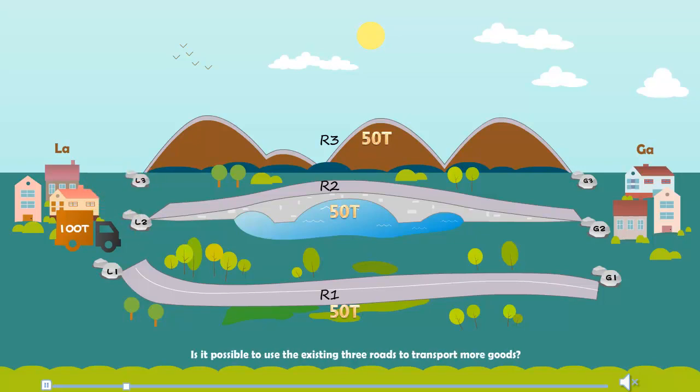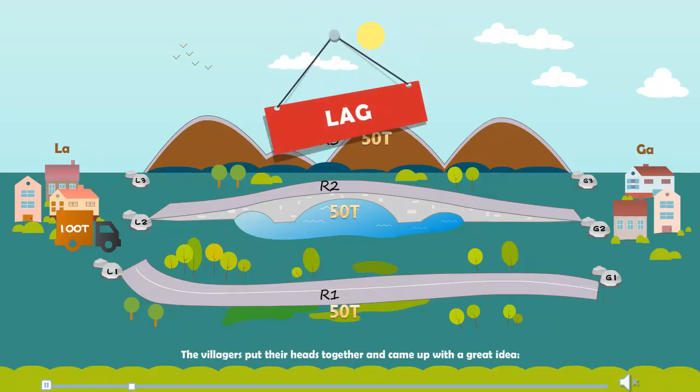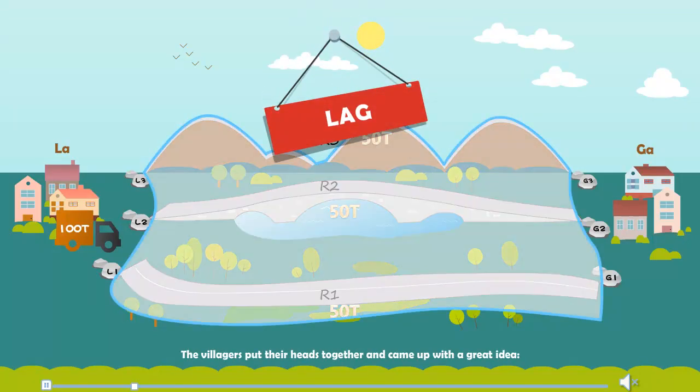Is it possible to use the existing three roads to transport more goods? The villagers put their heads together and came up with a great idea: Link Aggregation Group, LAG.